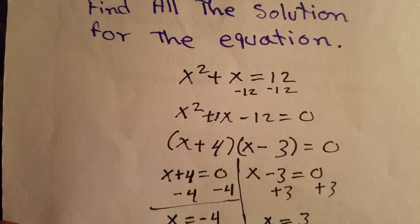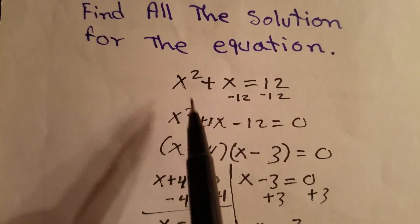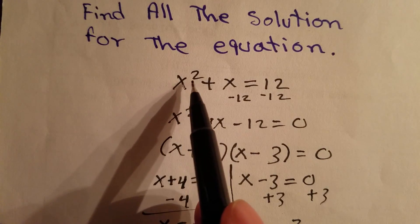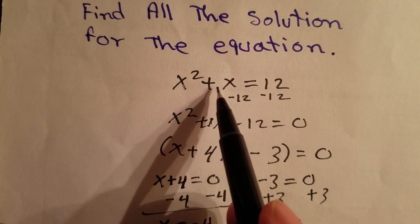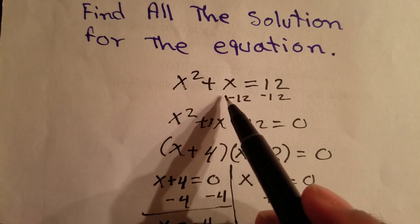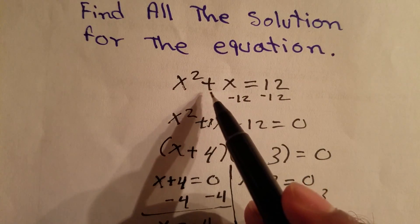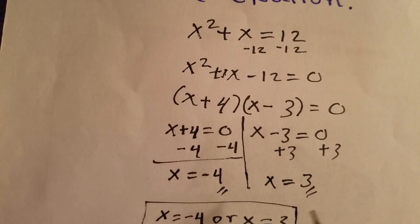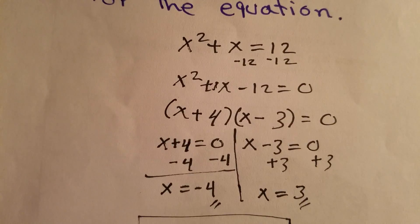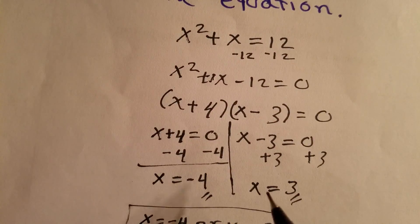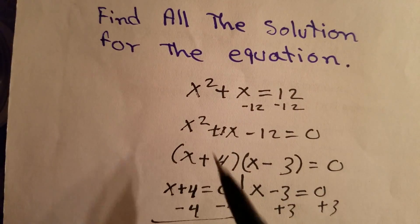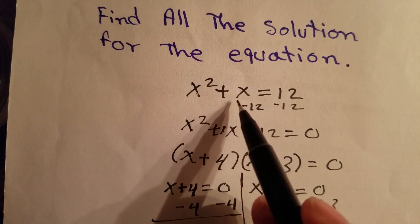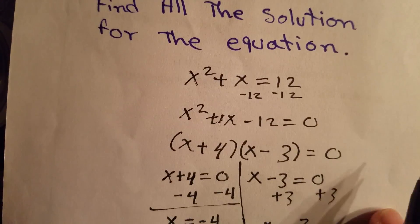If you plug -4 in here, (-4)² will give you 16, and then if you substitute -4 for x here, 16 - 4 = 12, so 12 = 12, so that's right. And for 3, you can substitute the same as before. If you substitute 3 here, 3² = 9, plus 3 is 12, 12 = 12, so our checkpoint also works.